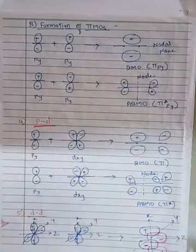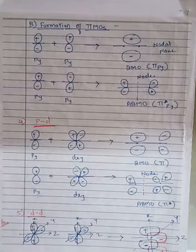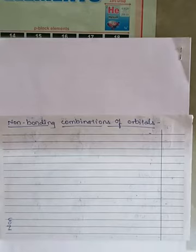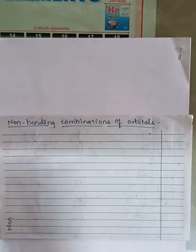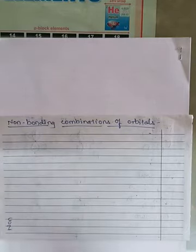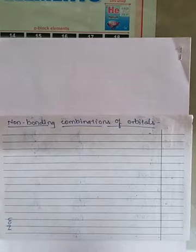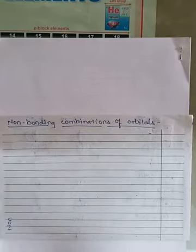The anti-bonding delta MO can also be found, but its structure is quite complicated so it will not be covered here. Along with these various types of combinations, there are also non-bonding combinations of orbitals. Non-bonding orbitals are those that do not take part in bonding — either because they are very low in energy or they do not have proper symmetry — resulting in the formation of non-bonding molecular orbitals.